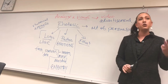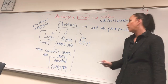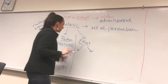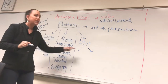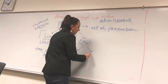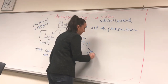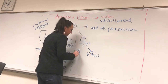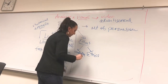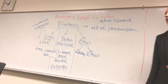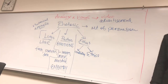Ethos has two parts. One of them starts with E, so make sure you're not thinking ethos equals emotions — that's wrong. Think ethos equals ethics, or credibility. So ethos has two parts: ethics and credibility.